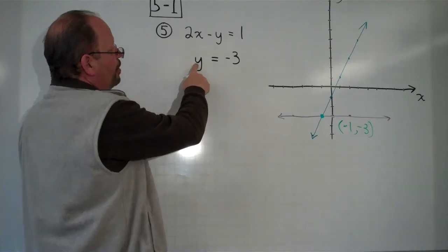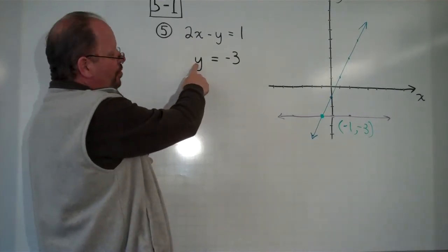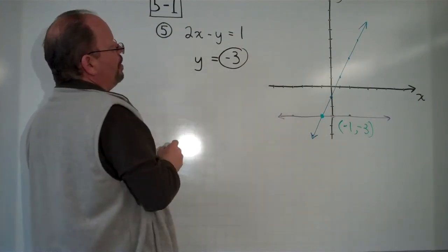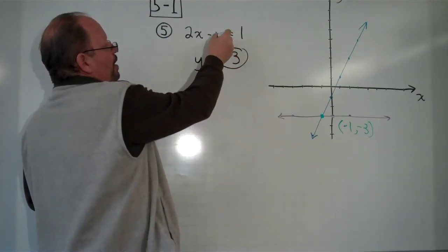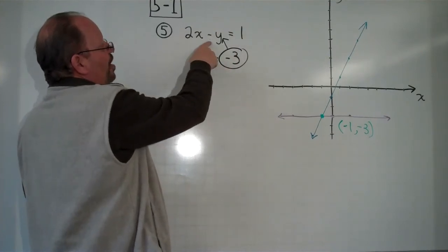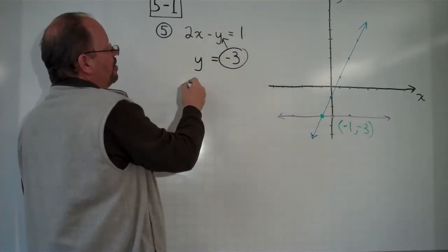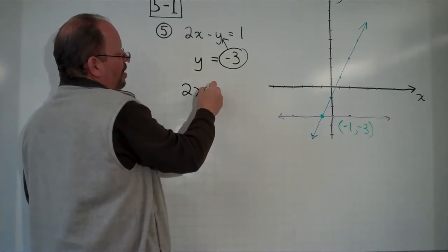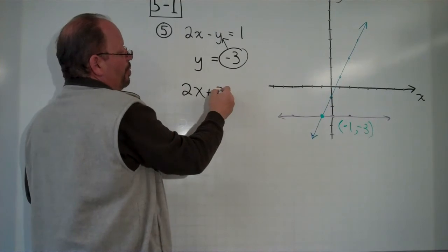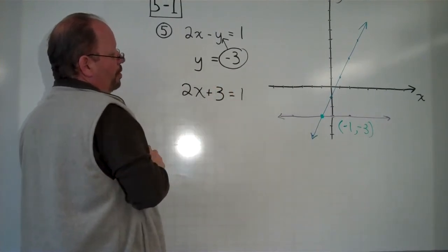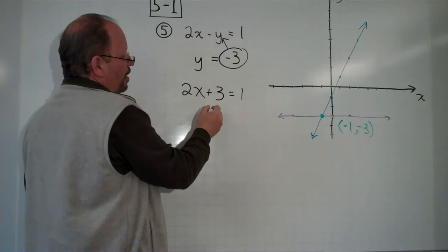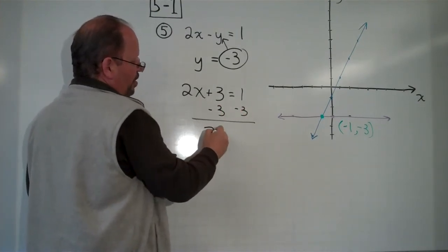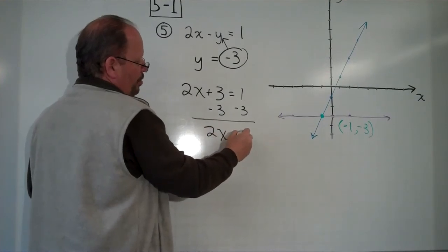So what we're doing is we're looking for which one of the variables equals something. In this case, y equals negative 3. So we can go right up here, and we can substitute negative 3 into this equation for y. 2x minus negative becomes plus positive 3 equals 1. Then to solve for x, we would subtract 3 from both sides. 2x equals negative 2.